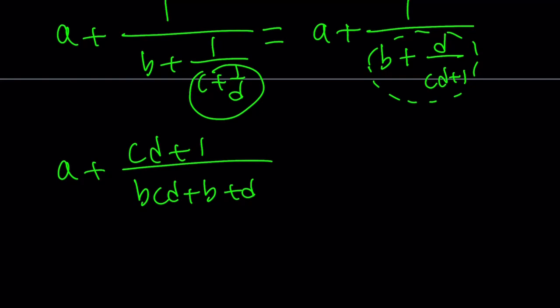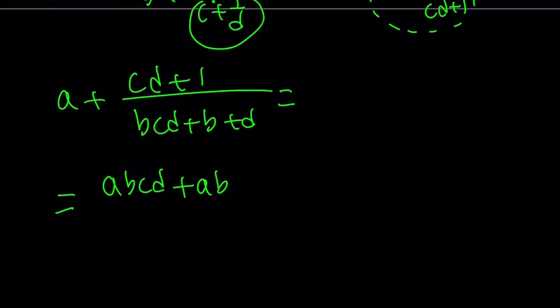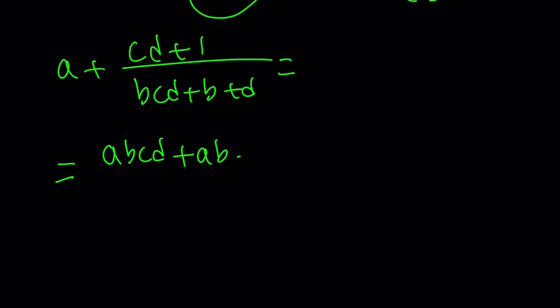Do it one more time, and you're going to get the following. We have A plus this, so I make a common denominator. There's no more flipping, we're just going to make a common denominator here, so this part is easy. A times BCD plus AB, CD plus 1, all over BCD plus B plus D.